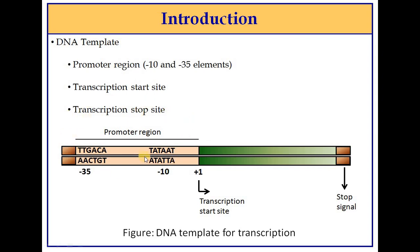The promoter region in prokaryotes is made up of two elements called the minus 10 and minus 35 elements. The transcription start site is where RNA formation starts. The minus 10 element is located 10 base pairs upstream of the transcription start site, and similarly, the minus 35 element is located 35 base pairs upstream.